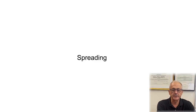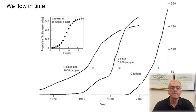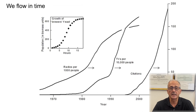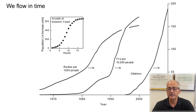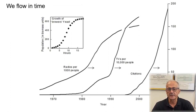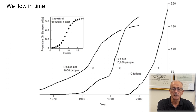Continuing the idea of movement: everything that flows, flows in time and in space — that combination is called spreading. Examples include the growth of the population of brewers' yeast, the growth of people with radios and then TV sets in history, and the number of citations of any research paper versus time — the citations represent the spreading of knowledge on the surface of the earth. The spreading is in S-curve fashion: slow, fast, slow.